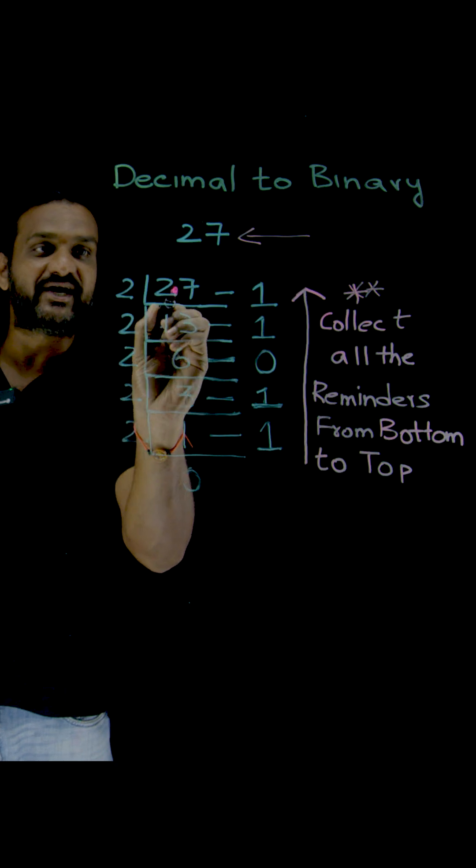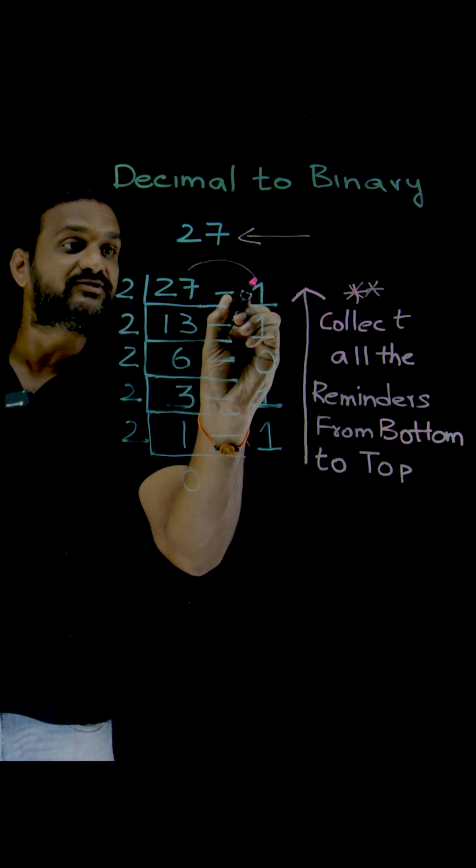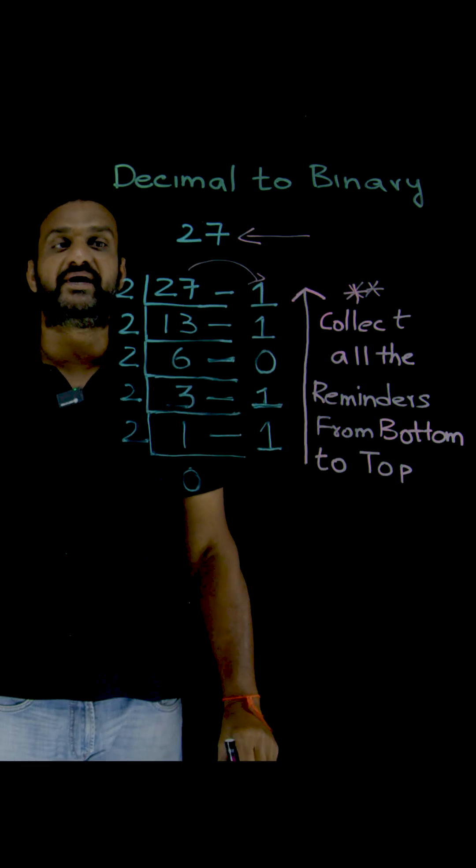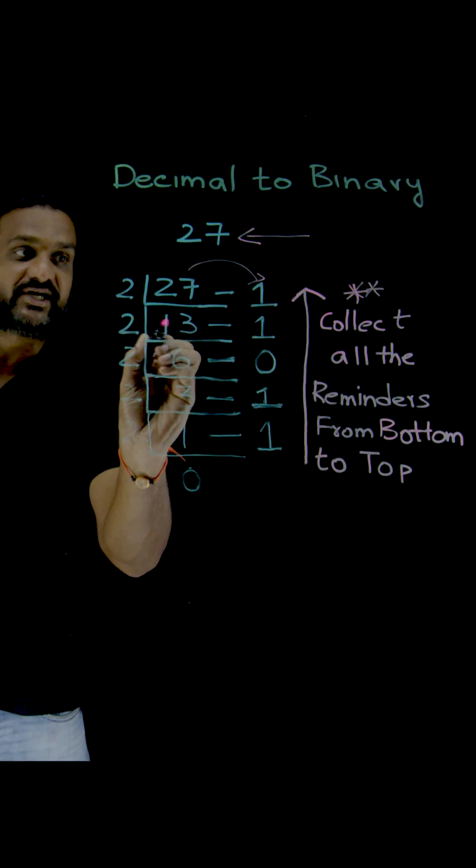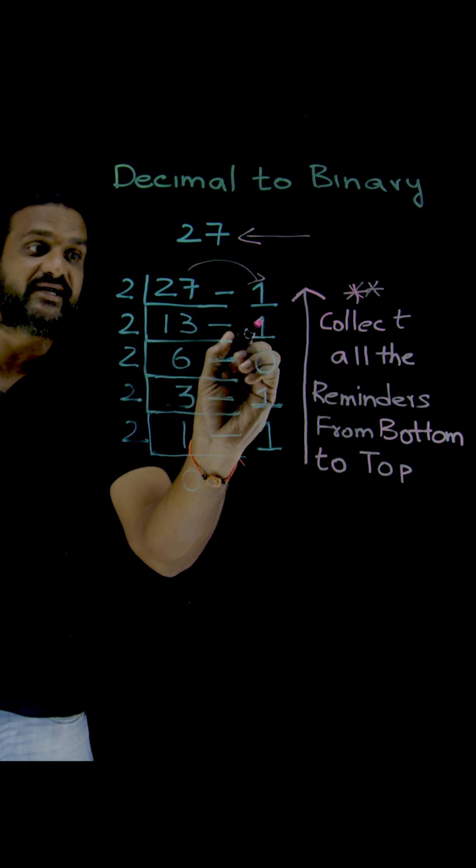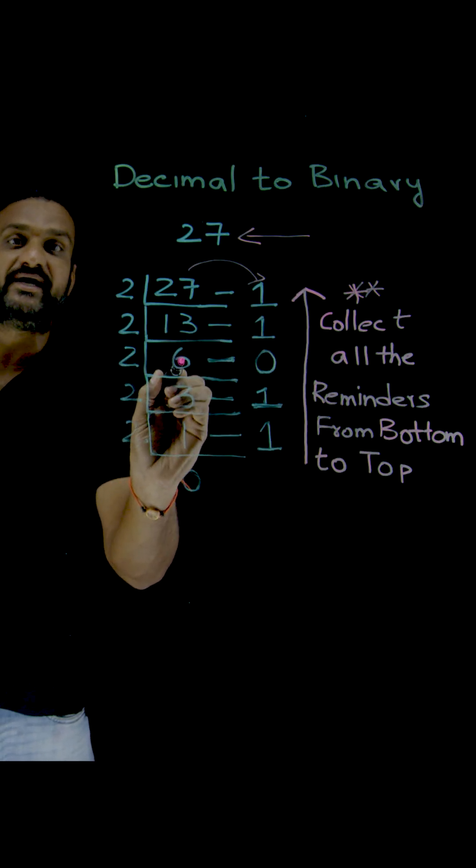First we have 27. If you divide it by 2 we get a quotient of 13 and a remainder of 1. This is where we write the remainder. The next calculation: 13 divided by 2 gives quotient 6 and remainder 1.